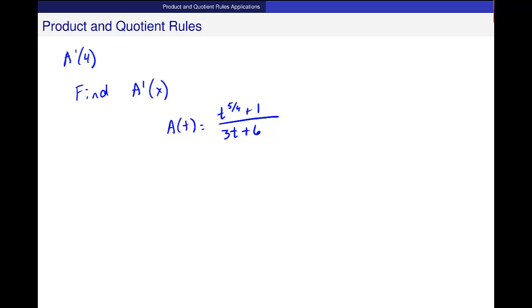Now I have to use the quotient rule to differentiate. I have t in two places and there's no way to simplify or combine them. Let's say f(t) is t to the 5/4 plus 1. When I take the derivative, I get 5/4 out front, t to the 1/4. The derivative of the constant 1 is 0. And g(x) equals 3t plus 6, and g'(x) equals 3.